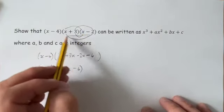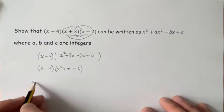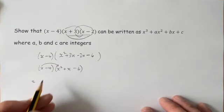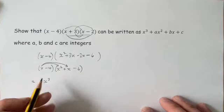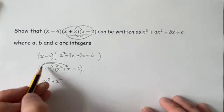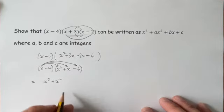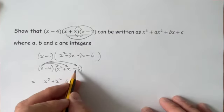What I'll do next: x times the x squared is x cubed, x times the x is x squared and that's positive, x times the 6 is 6x and that's minus.